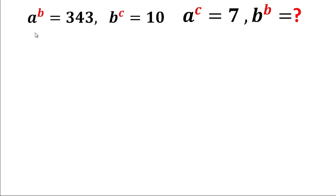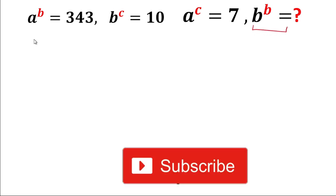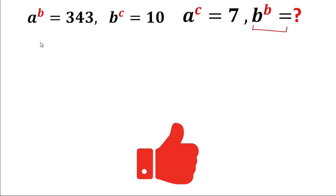Hey friends, welcome back. Today in this video we'll solve this algebraic problem. The given problem is: a^b = 343, b^c = 10, a^c = 7, and we have to find the value of b^b. If you have not subscribed to my channel, please subscribe and give a thumbs up to the video. Let's start.